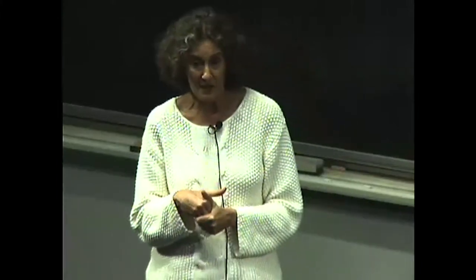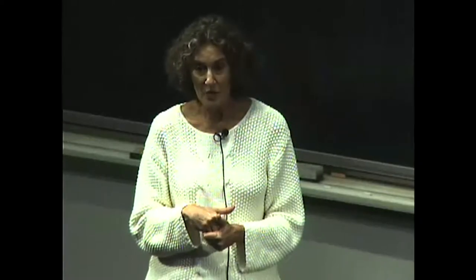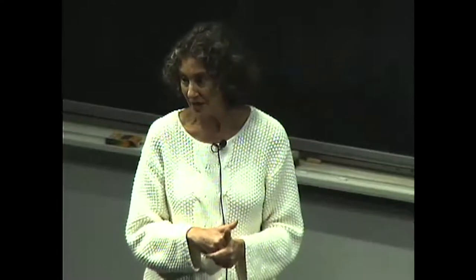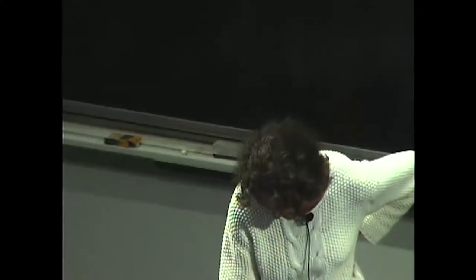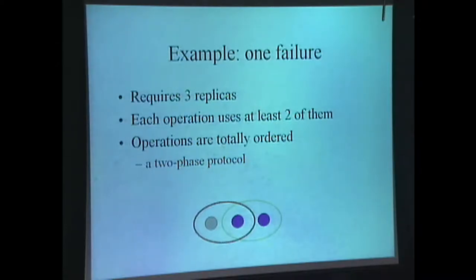In the 80s, people concentrated on fail-stop failures for two reasons: hardware wasn't reliable, and this seemed hard enough — we didn't understand how to build replication systems that could survive even simple failures. To survive simple fail-stop failures requires 2f+1 replicas. For example, to survive one failure you need three replicas. When you run operations, each operation must check in with at least f+1 replicas. Operations must be totally ordered, requiring a two-phase protocol.